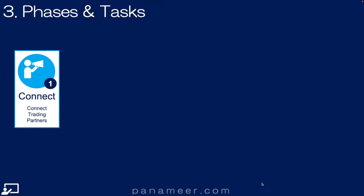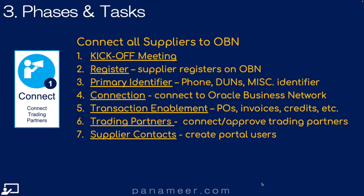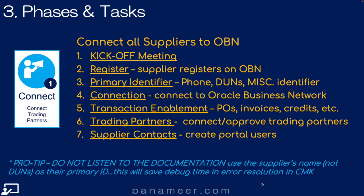Now we'll run through each step in the supplier enablement process. Step 1: The Connect step. The goal is to connect all suppliers to OBN. Here are the major tasks. Pro tip: do not follow OBN's documentation on this — use the supplier's name, not the DUNS number and not the phone number, as the primary ID. This will save you a lot of time when debugging inbound invoices or outbound POs.